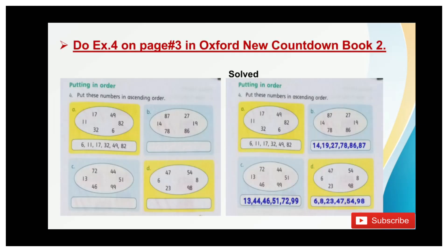Now open page number 3 and do exercise 4: Put these numbers in ascending order. As you can see, number 1 is already done in this exercise for you. Let's start from part B. Here are some numbers. Now pick the number from smallest to largest and put in the given box. So what's the smallest number here? It is 14, then 19, 27, 78, 86, then 87. Write down in the given box. Now part C, the smallest number is 13, then 44, 46, 51, 72, 99.